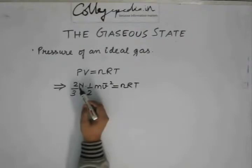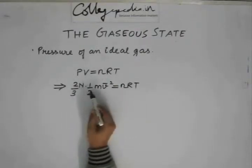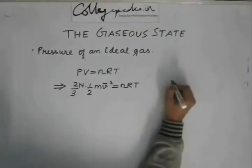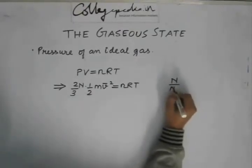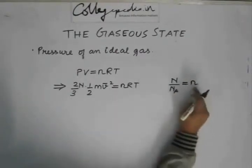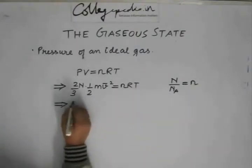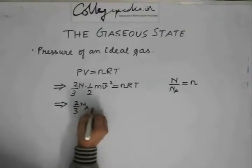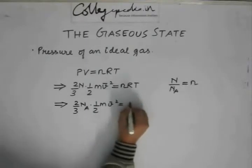The total number of molecules and the number of moles, if we divide them, what we really get from this expression is n by the Avogadro's number. This becomes equal to n, so n can be replaced with n times the Avogadro's number. Here, from that, we get 2 by 3 nA into half mV square equal to RT.